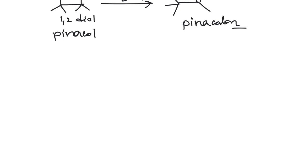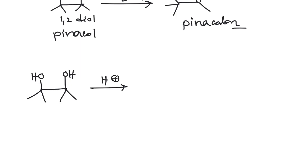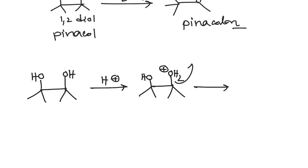What should be the mechanism of this reaction? Let us start from the beginning. This is our substrate pinacol and we are giving acid. This acid will protonate any of these hydroxyl groups. From this, water can be liberated to give you a carbocation, and this carbocation will then be rearranged.